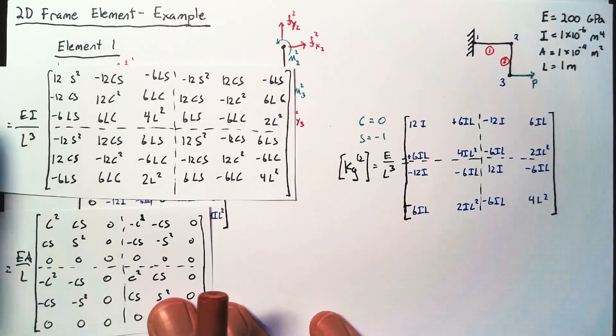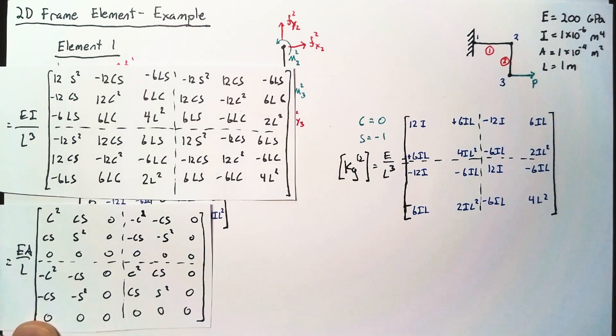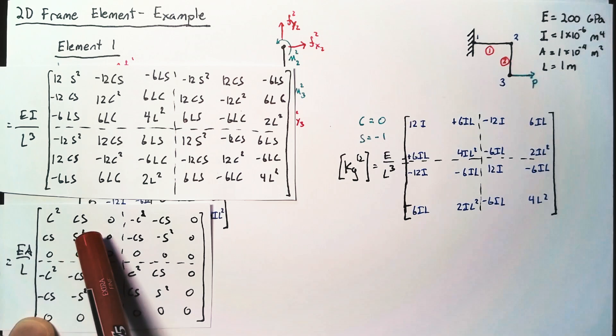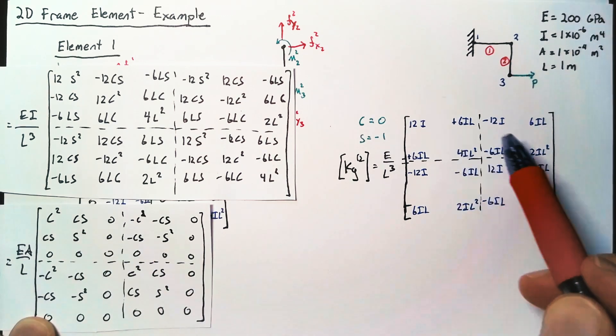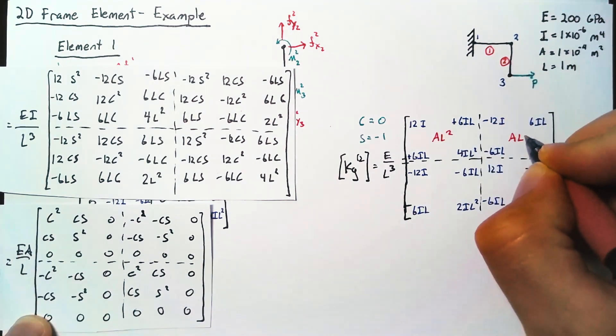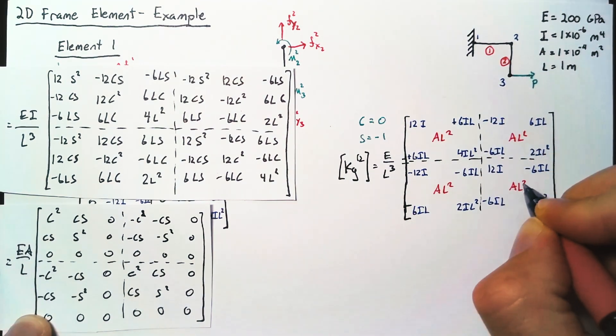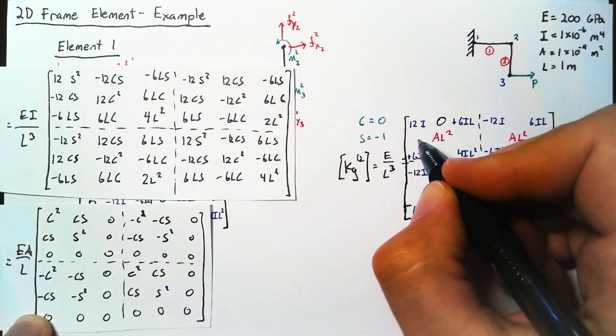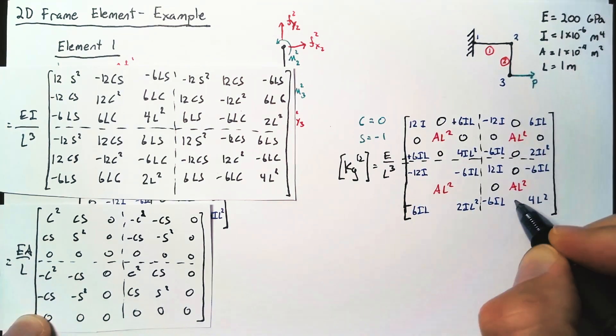For our truss stiffness matrix, this time the only location that survives is the S squared location. And so we're going to end up with AL squared in the center of each of these submatrices. And then once we have all of that in, we can put 0s everywhere else.